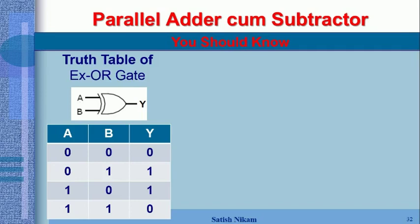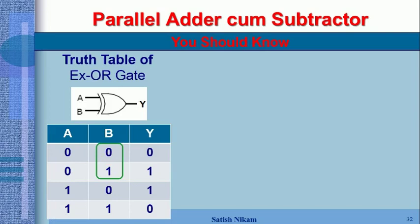Now I am going to discuss this truth table in a different fashion. When input A is zero, and B varies between 0 and 1, the output Y remains the same as B. When input A is one and you apply B as 0 and 1, you get the complement of the B input.